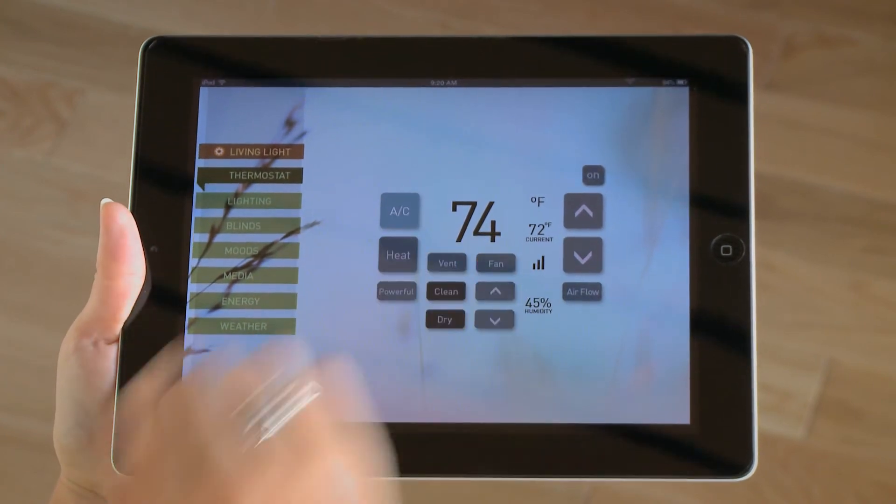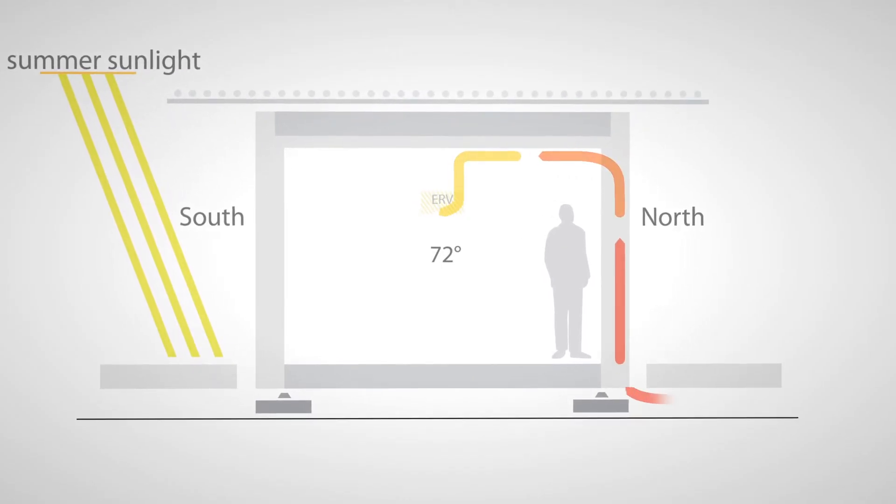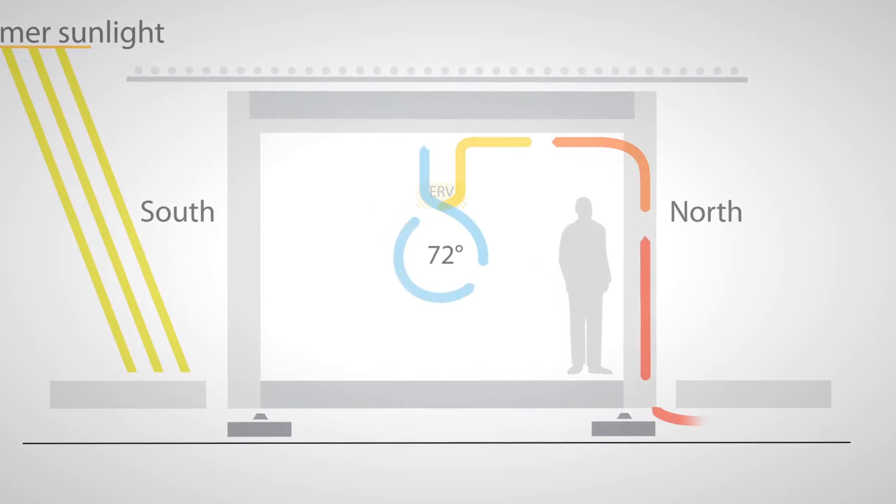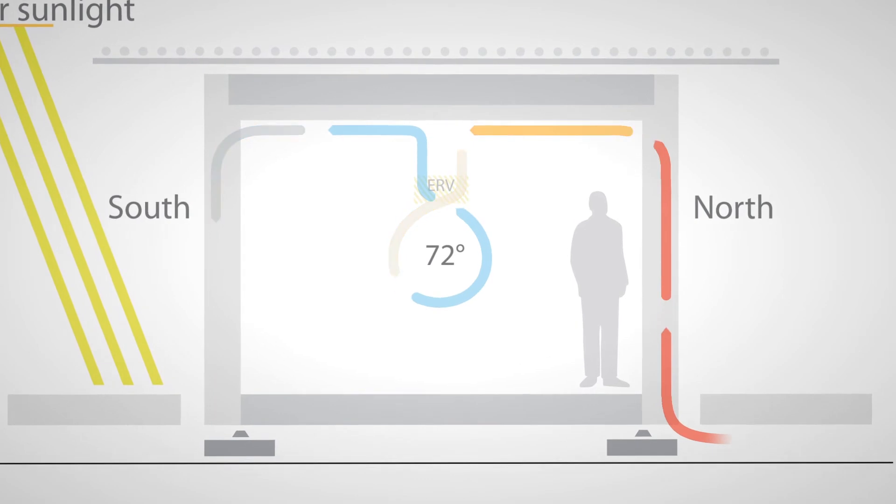In the summer, fresh air is brought into the home on a prescribed cycle through the north window cavity. This air exchanges heat in the energy recovery ventilator and exhausts stale air through the southern windows, cooling the cavity and reducing thermal heat gains.